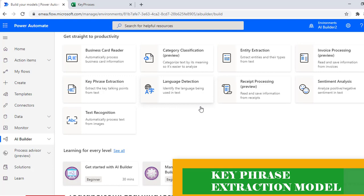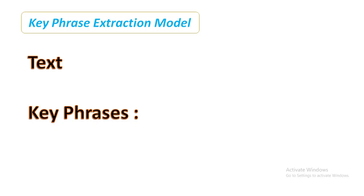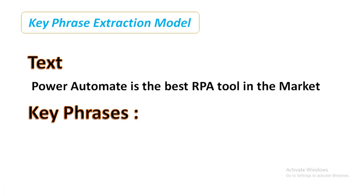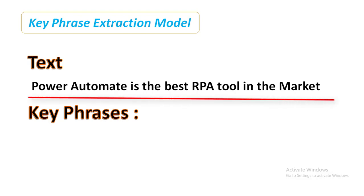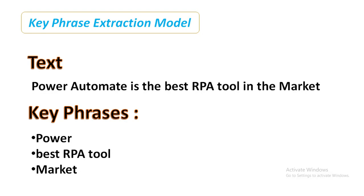This key phrase extraction capability is useful if you need to quickly identify the main points in a collection of documents. For example, if you provide the text 'Power Automate is the best RPA tool in the market,' using the key phrase extraction model we can identify the main points. The key phrases extracted would be: power, best RPA tool, and market.